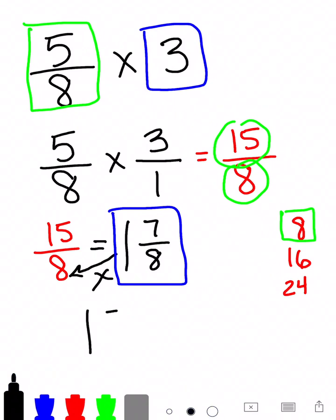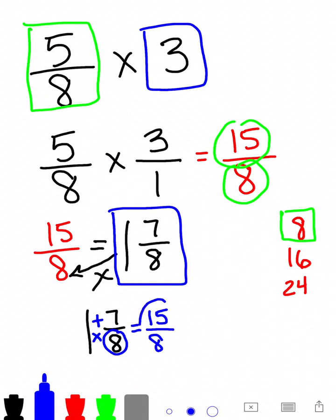So if we have the fraction 1 and 7 8ths, to change that back to an improper fraction, you take your bottom number, so in this case it's 8, and you multiply it by the big number. So 8 multiplied by 1 is just 8. Then you add 7 to that. So 8 times 1 is 8, plus 7 is 15. And you bring that denominator straight over. So you can see that this is the same as this.